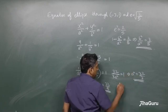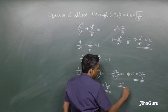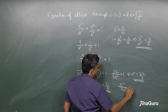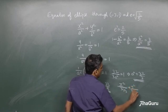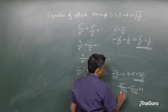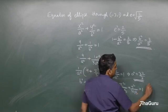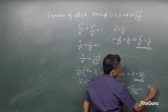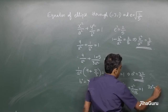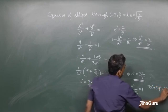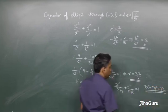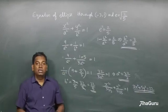The equation of the ellipse is x squared by a squared, so x squared by 32 by 3 plus y squared by 32 by 5 is 1. This is nothing but 3 x squared plus 5 y squared equals 32. This is the equation of the ellipse.